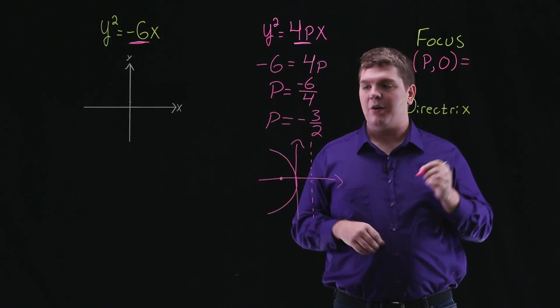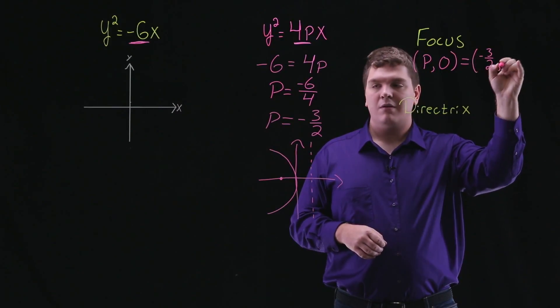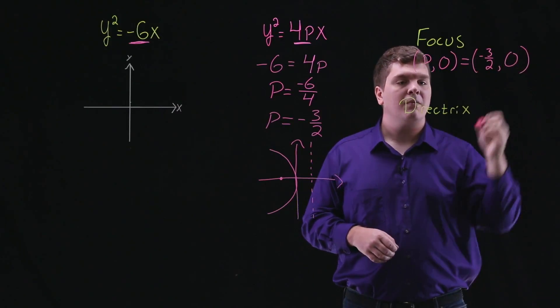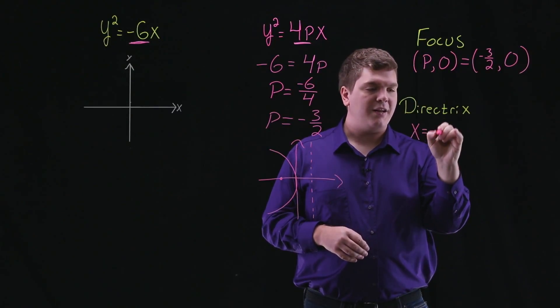So substituting p in, we know the focus is the point (-3/2, 0), and the directrix is going to be the line x = -p.